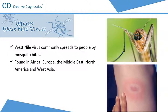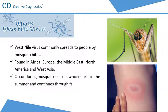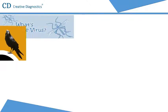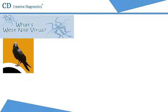Cases of West Nile virus occur during mosquito season, which starts in the summer and continues through fall. West Nile virus cases have been reported in all of the continental United States.